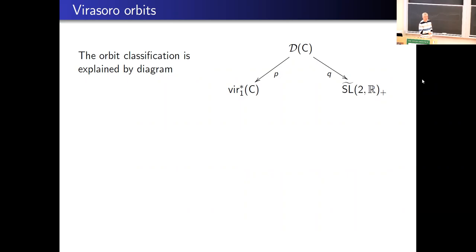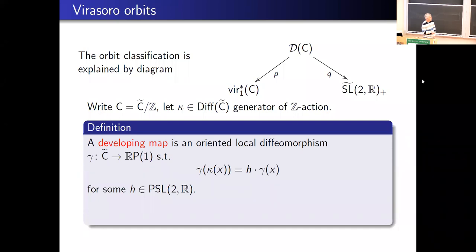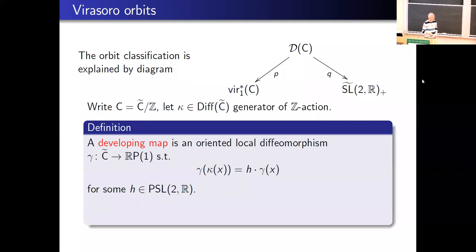This classification can be explained in terms of a diagram, just like we had for the gauge group. The space D(C) is the space of developing maps. We take the universal cover C-tilde, with kappa the generator of deck transformations. A developing map — from projective geometry — is an orientation-preserving local diffeomorphism from C-tilde into RP^1, the projective line, which is quasi-periodic: moving by a deck transformation picks up a monodromy in PSL(2,R). The space D(C) consists of all such developing maps.